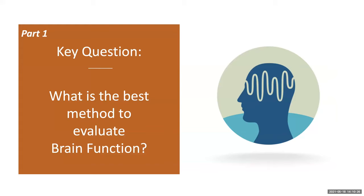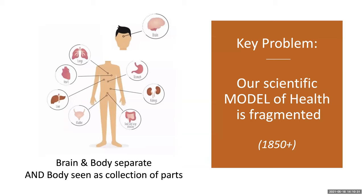What do we think is the best method to evaluate brain function? A key problem for all medical science is that our scientific model of health is fragmented. Starting in the mid-19th century, medicine adopted an approach called reductionism. This approach is almost invisible in our current medical system, but underlies all kinds of decisions about how we see the body, the parts of the body, and disease.